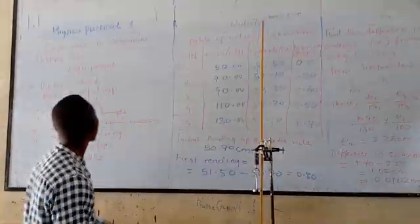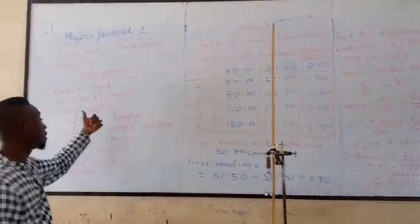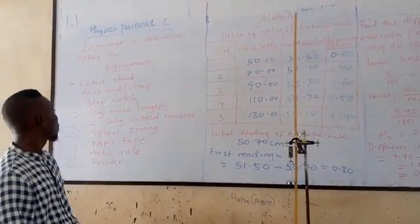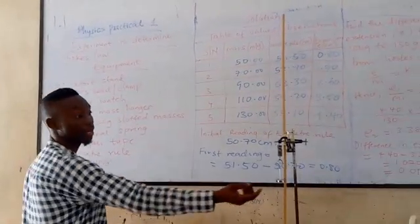First, we have here the wet sand. We have a wash to flame. We have a stopwatch. We have a 50 gram mass hanger, which is this.